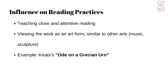New Criticism significantly influenced reading practices by teaching readers to engage closely and attentively with the text. This approach likens the study of literature to the appreciation of other art forms, such as music and sculpture. For example, just as one might study Mahler's Ninth Symphony or Michelangelo's David for their artistic merits, the New Critics encouraged readers to approach literature with the same level of attention and appreciation. Keats' Ode on a Grecian Urn exemplifies this method, as the persona in the poem contemplates the urn's artistic beauty and eternal truth. This analogy underscores the idea that literature, like other forms of art, can be appreciated for its craftsmanship and internal coherence.